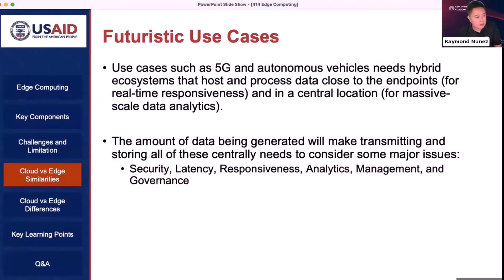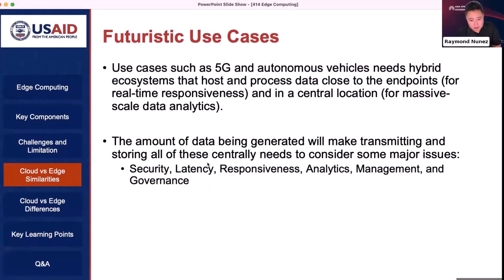Next is similarities. Futuristic use cases such as 5G and autonomous vehicles need a hybrid system because you need to process the data on-site. That helps our sensory networks react accordingly for responsiveness and the decisions we need to make. We need to consider security, latency, analytics, management, and of course governance of the data.